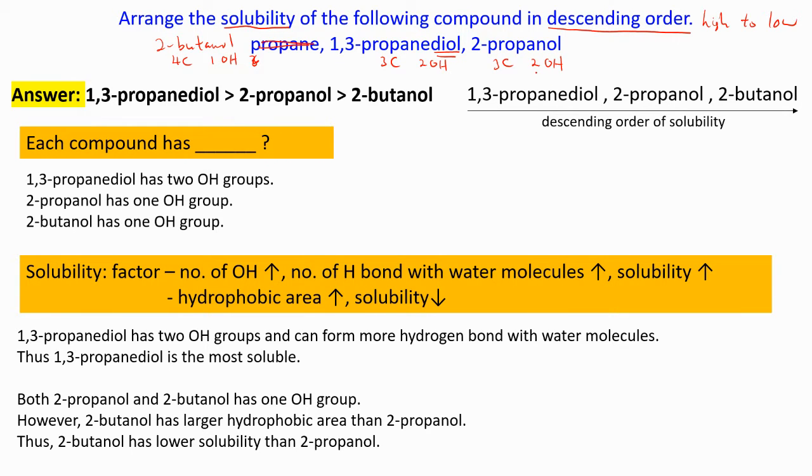How are we going to arrange them? Which one has the highest solubility? The highest solubility is the one that has more hydroxyl group that can form more hydrogen bonds.